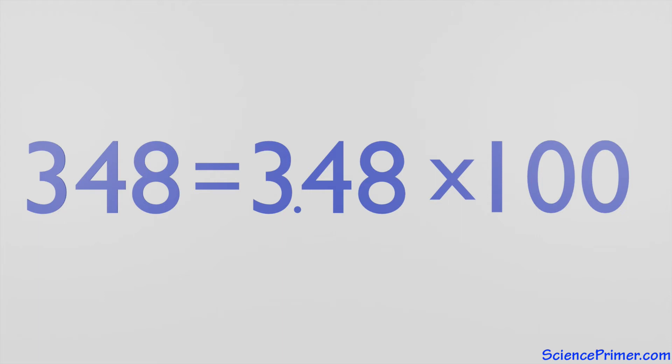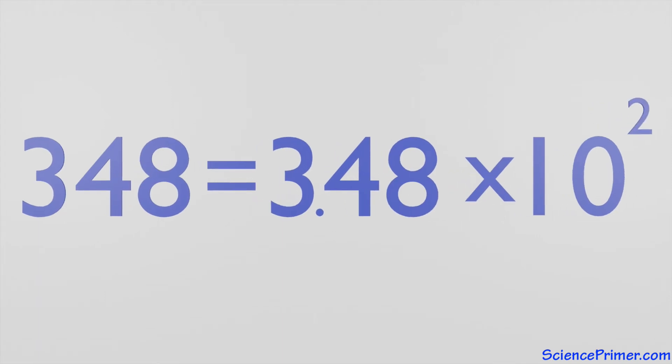Therefore, 348 and 3.48 times 10 to the 2 are different representations of the same value. Values less than 1 can be converted using the same pattern.